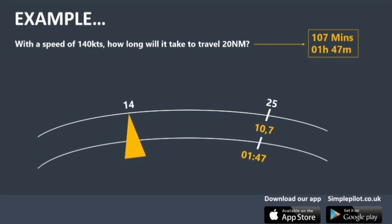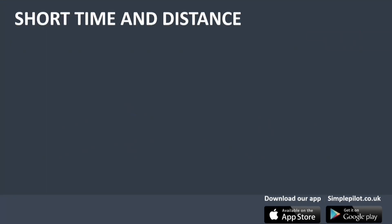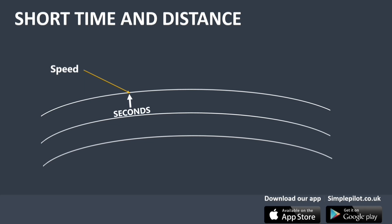If we have time and distance and need to determine the speed, we align the time from the inner and middle scales with the corresponding distance on the outer scale, then read the resulting speed pointed to by the speed index. When handling small values of time and distance, a different speed index should be used — the seconds index on the middle scale. This way, the resulting time will be given in seconds on the middle scale and in minutes on the inner scale.